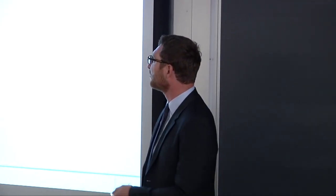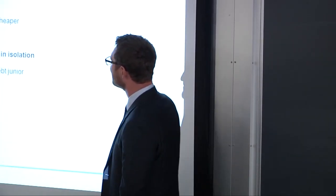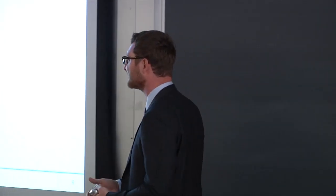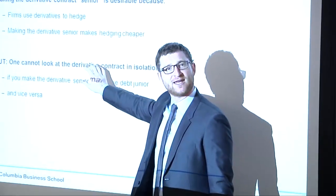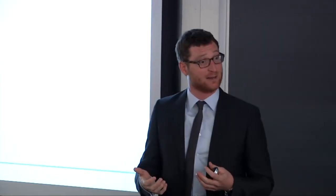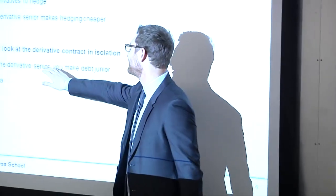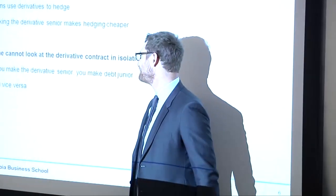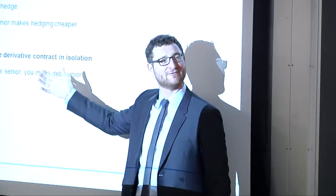The flaw in this argument — and if I would want you to take one thing away from this talk, it is this — is that this argument only looks at part of the pie. If you want to think about strengthening the rights of derivative counterparties to make derivatives cheaper, you can never look at this in isolation. The firm has other claimants, creditors for example. If you make the derivative contract senior, you make the debt contract junior. Only one person can get paid off first. To think about this question properly, you really want to look at the entire picture, not just one claim in isolation.